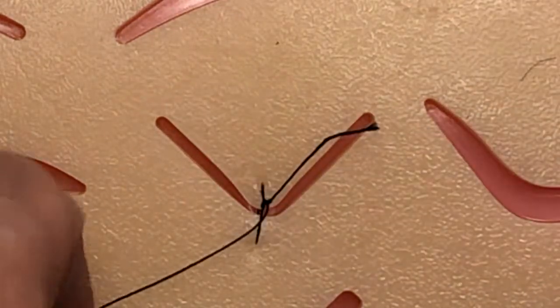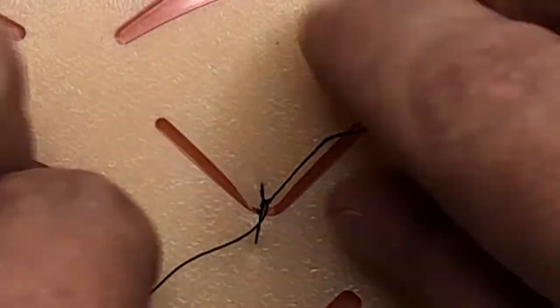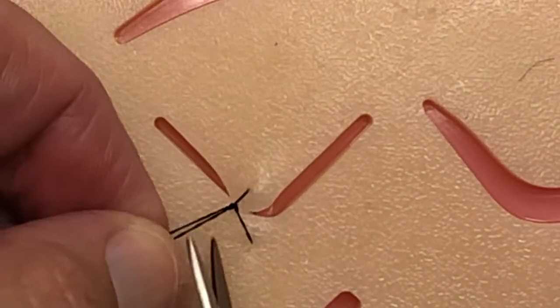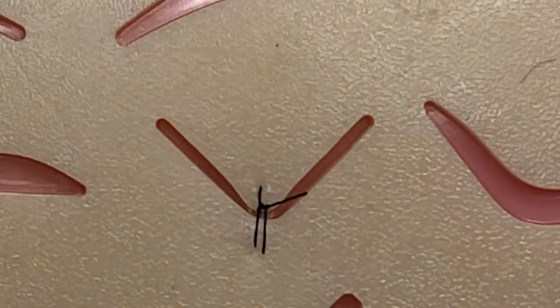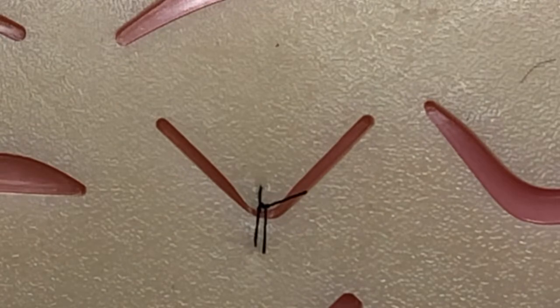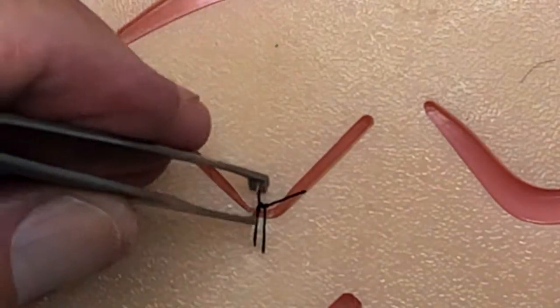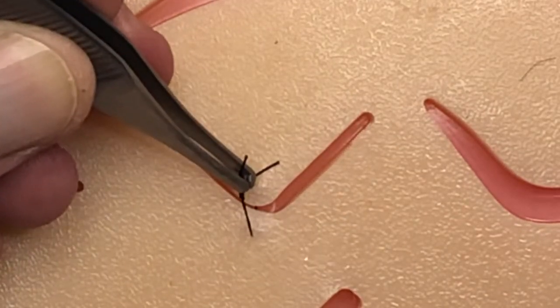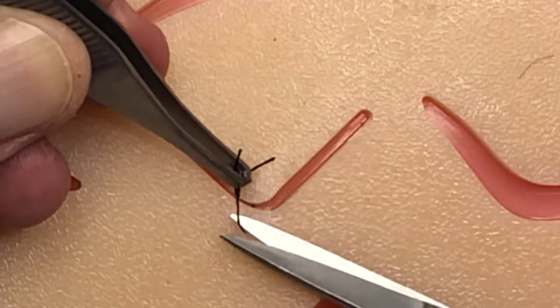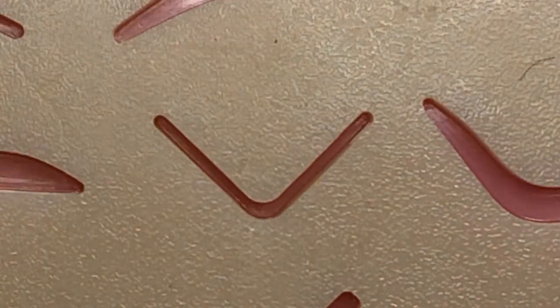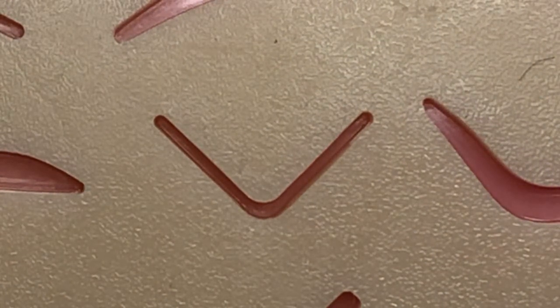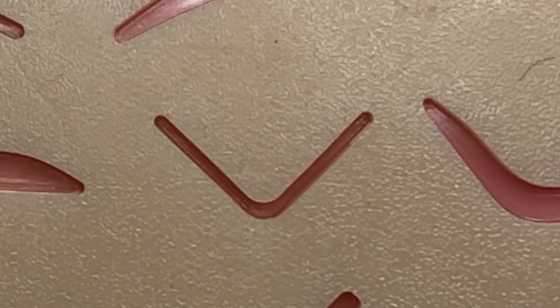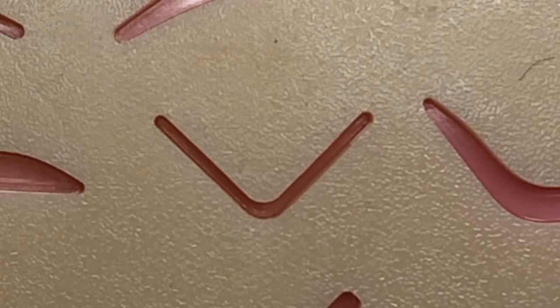And then we're going to snip right there. So you've got your suture. All right, so what we'll do is we're going to come in and we're going to practice removing that stitch. So you can try to grab your knot, lift up the edge, make a little snip, pull it out.